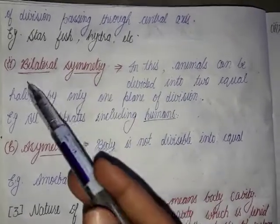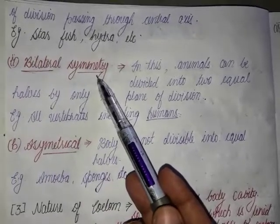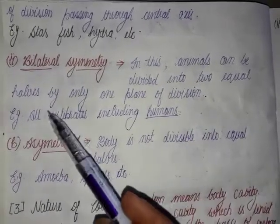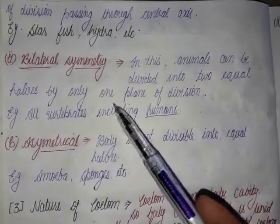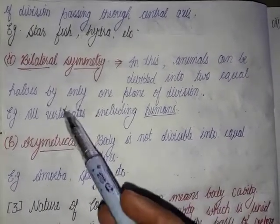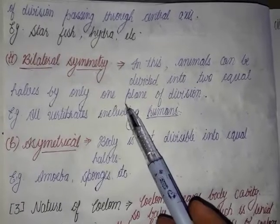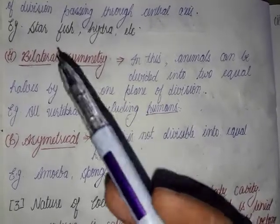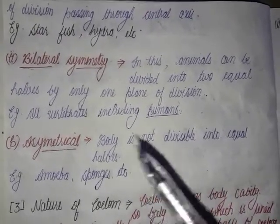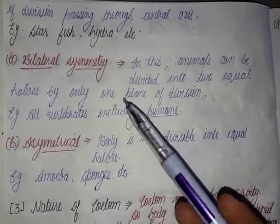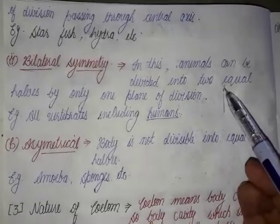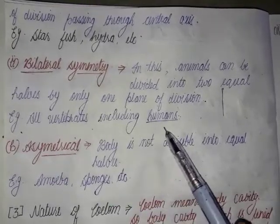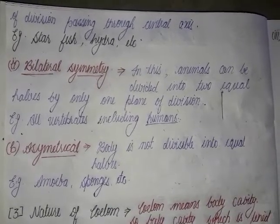The second type is bilateral symmetry. In bilateral symmetry, animals can be divided into two equal halves by only one plane of division — the longitudinal plane. Other planes such as transverse or horizontal do not divide the body into two equal halves. All vertebrates including humans show bilateral symmetry.